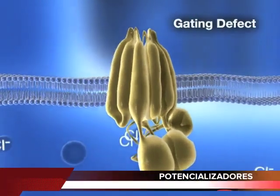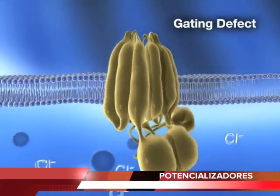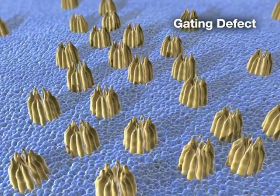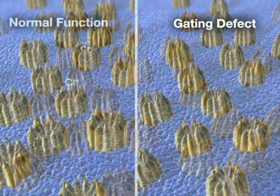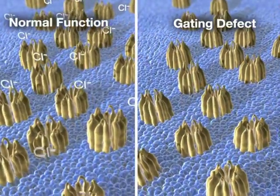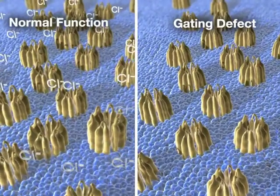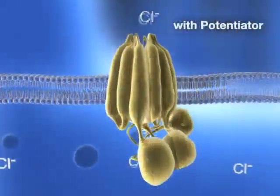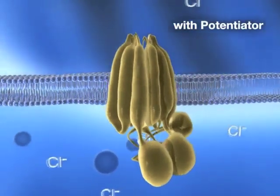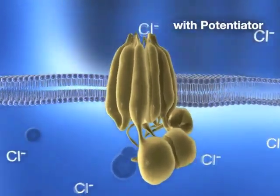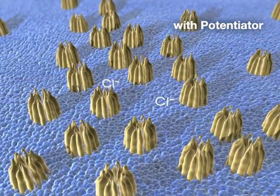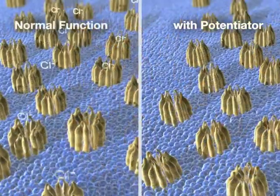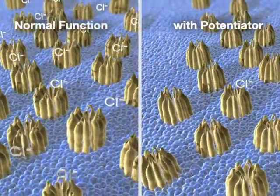With other CFTR mutations, although the CFTR protein reaches the cell surface and is present in normal amounts, it fails to transport chloride due to impaired activity of the channel. Investigational agents called CFTR potentiators aim to increase the channel activity of the CFTR protein located at the cell surface, resulting in enhanced ion transport.